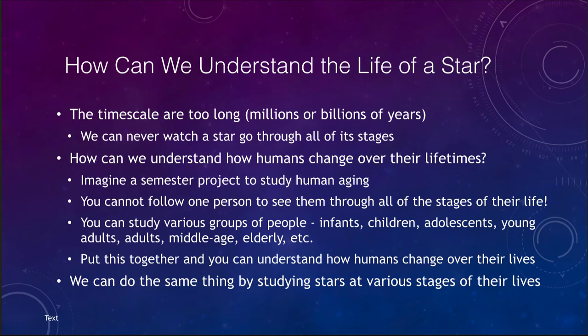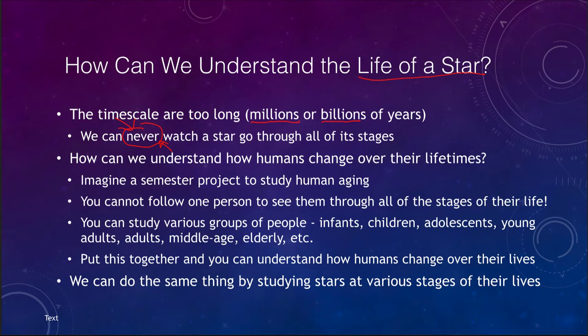First, how can we possibly understand the life of a star? We have to think about the fact that the timescales are minimally millions of years, and more likely for stars like the sun, billions of years. This means we can never watch a star go through all its stages of life — even over multiple human lifetimes, stars are unlikely to change at all.